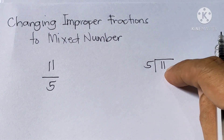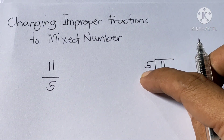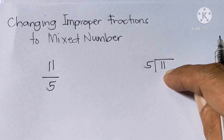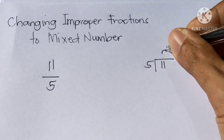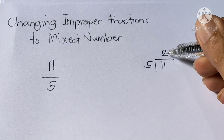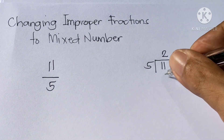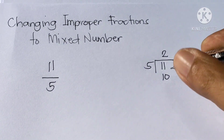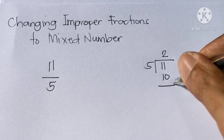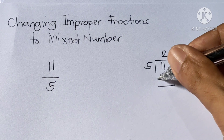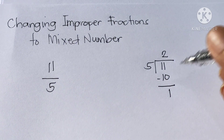11 is inside (the division bracket) and 5 is outside. 11 divided by 5 is 2. Then, 2 times 5 is 10. So, 11 minus 10 is 1.